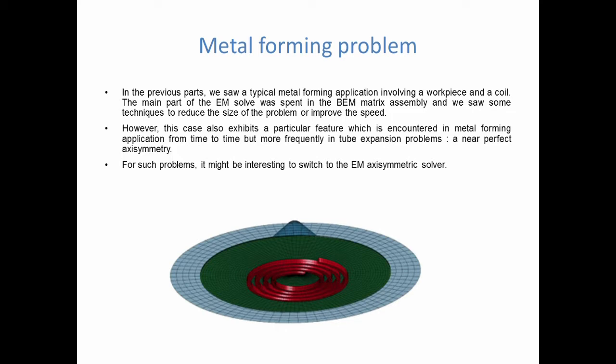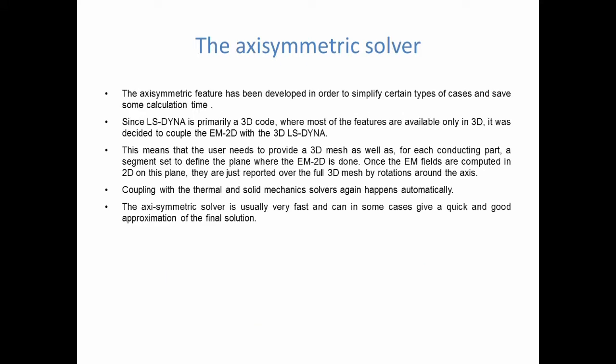However, one thing which we hadn't yet remarked upon was the fact that this case, this particular case which we usually worked with, that it exhibited a particular feature which is sometimes encountered in metal forming applications, but more importantly which is very often encountered in tube expansion problems. We have a near-perfect axisymmetry. The workpiece is completely axisymmetric, for example. And why do I say near-perfect? Well, that's because of the coil. The winding of the coil will cause some 3D effects, but we'll see later that they can perhaps be neglected.